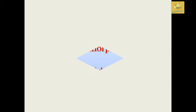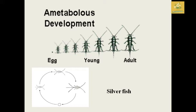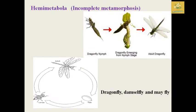The first type we are going to see is ametabolous development, where the young one has the same resemblance as the adult. They have the same body posture from their young stage, except in the egg stage. For example, silverfish.